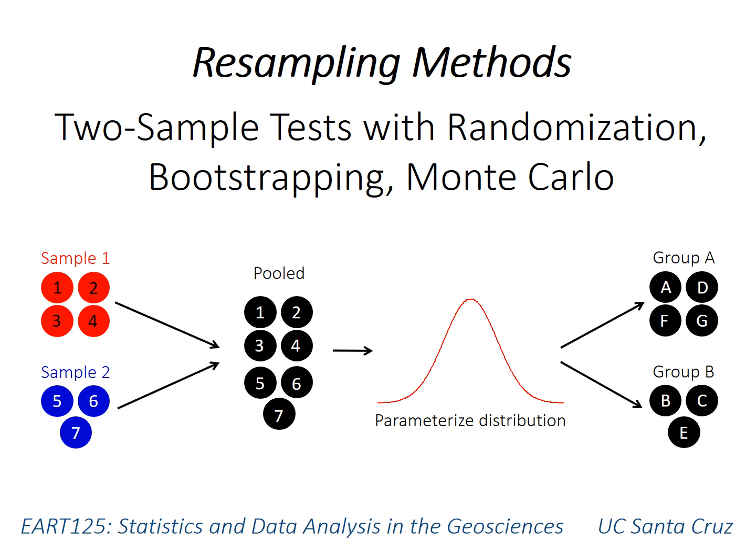The previous video introduced resampling methods by using the example of bootstrapping a confidence interval on a single parameter. But these methods can also provide the ultimate non-parametric approaches for performing two-sample tests, things analogous to the classical tests that we've been talking about throughout this class.